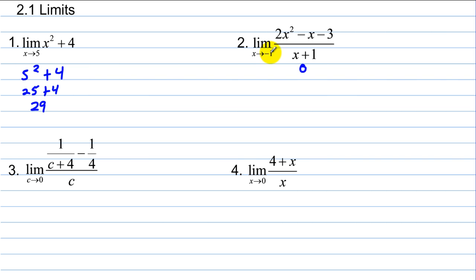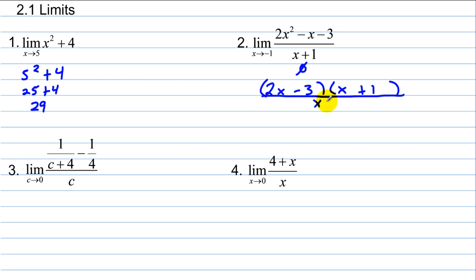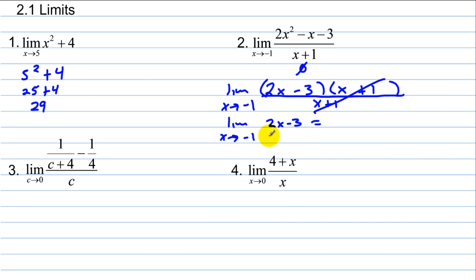In number 2, if we plug negative 1 into the denominator, we get 0 — and that is bad. So we have to eliminate the 0 in the denominator, and this problem requires factoring. We factor the numerator as (2x − 3)(x + 1), still over (x + 1). The (x + 1)'s cancel, leaving the limit as x approaches negative 1 of 2x minus 3. Notice that at each step we still write the limit statement. Now we can plug in negative 1: 2 times negative 1 minus 3 gives negative 2 minus 3, and the answer is negative 5.